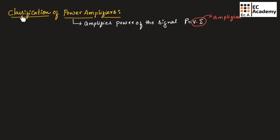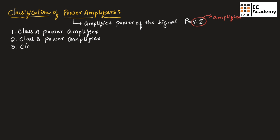The power amplifiers can be classified into different types. The first one is class A power amplifier. The second type is class B power amplifier. The next type is class AB power amplifier. And the fourth type is class C power amplifier.